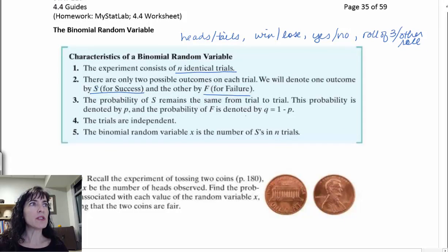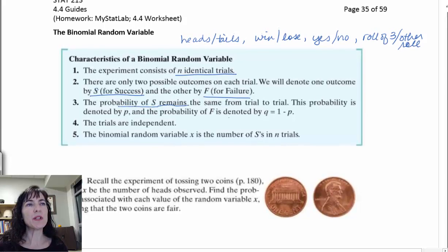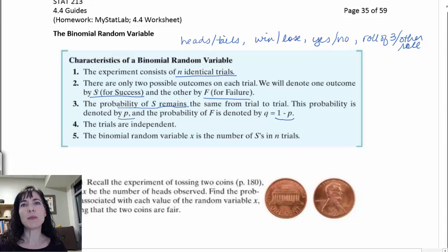Depending on how we define it, we could have dice rolls. The probability of S or our success is going to be the same. That's our criteria three for our binomial random variable. The probability of S is going to be the same from trial to trial. And that probability will be denoted by P. The probability of success is going to be denoted by P. And then the probability of failure is going to be Q, which we can also find by just taking one minus whatever our P is.